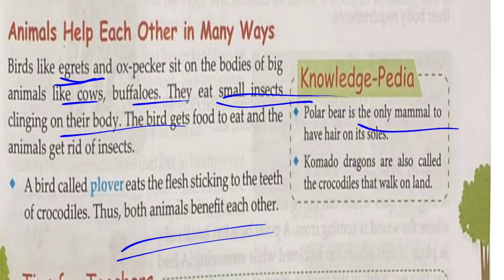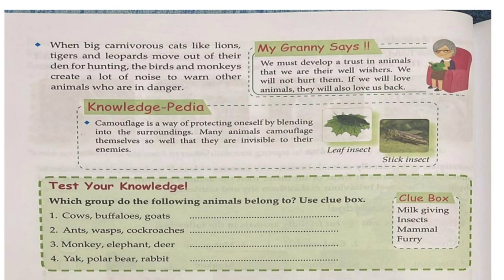The polar bear is the only mammal to have hair on its soles. Komodo dragons are also called the crocodiles that walk on land. When big carnivorous cats like lions, tigers, and leopards move out of their den for hunting, birds and monkeys create a lot of noise to warn other animals of the danger.